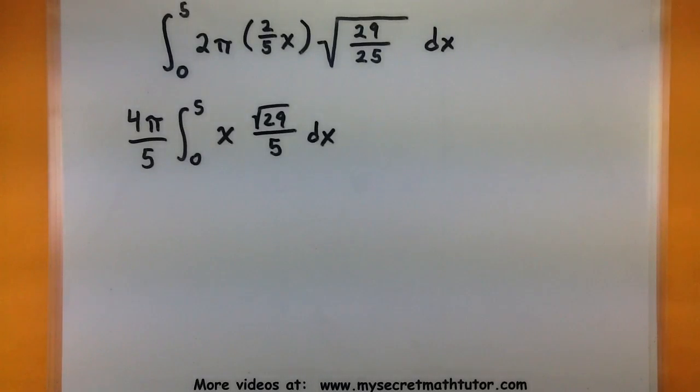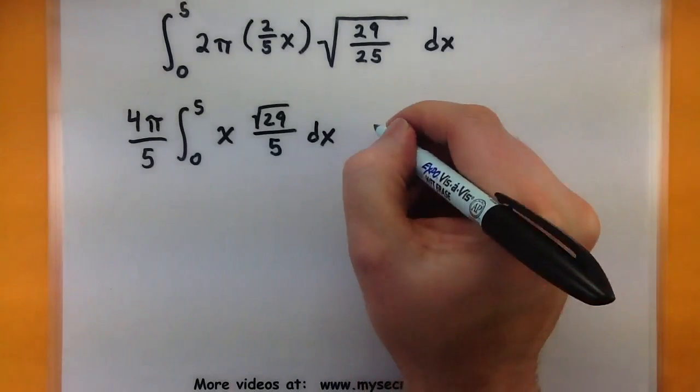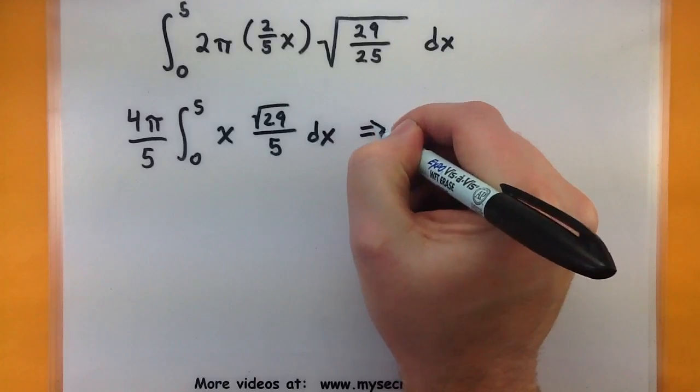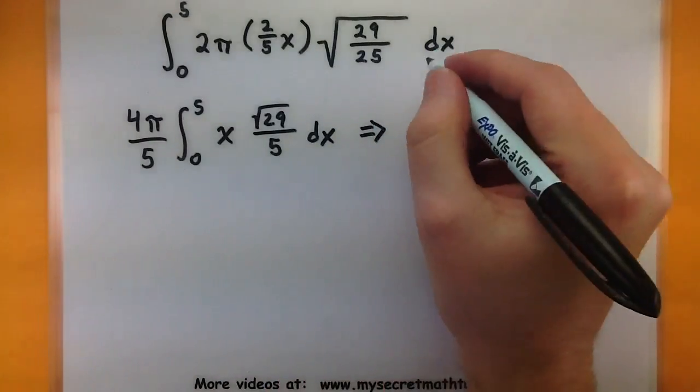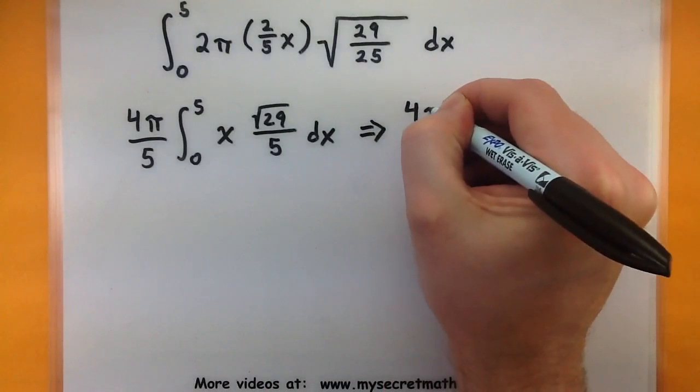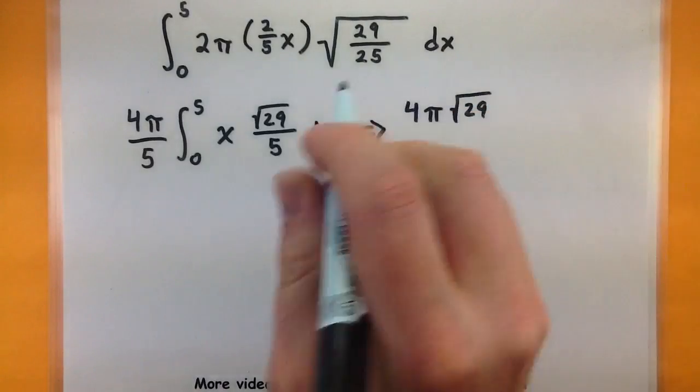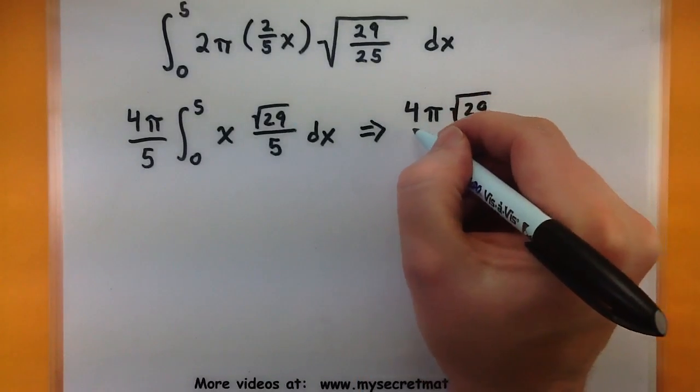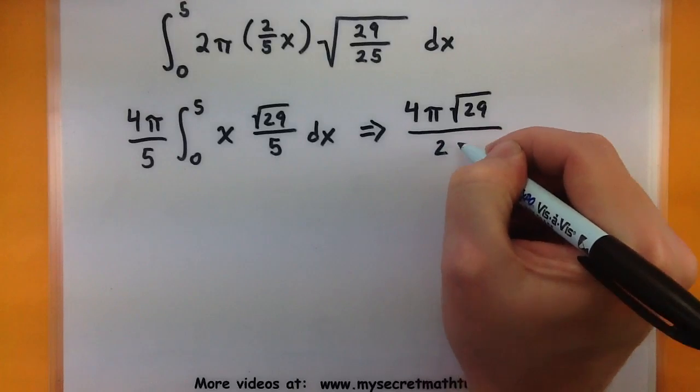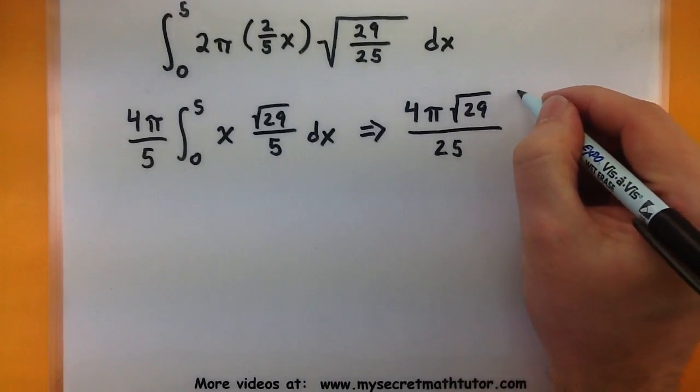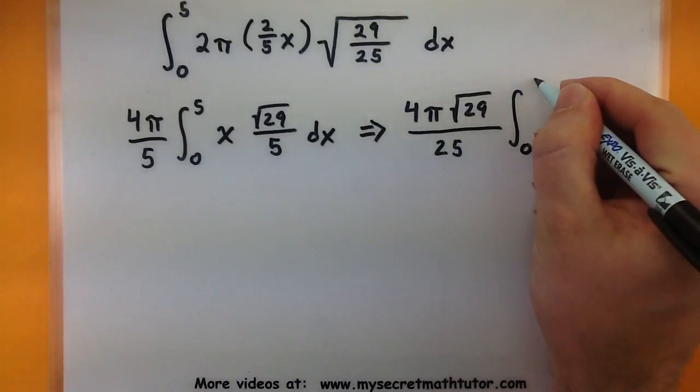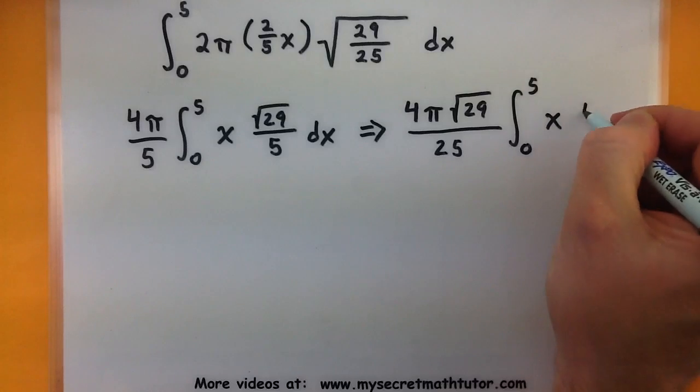Let's go ahead and do that. So this will be four π square root of twenty-nine, and when I move this five, it will combine with the other one, twenty-five, multiplied by our integral from zero to five of x dx.